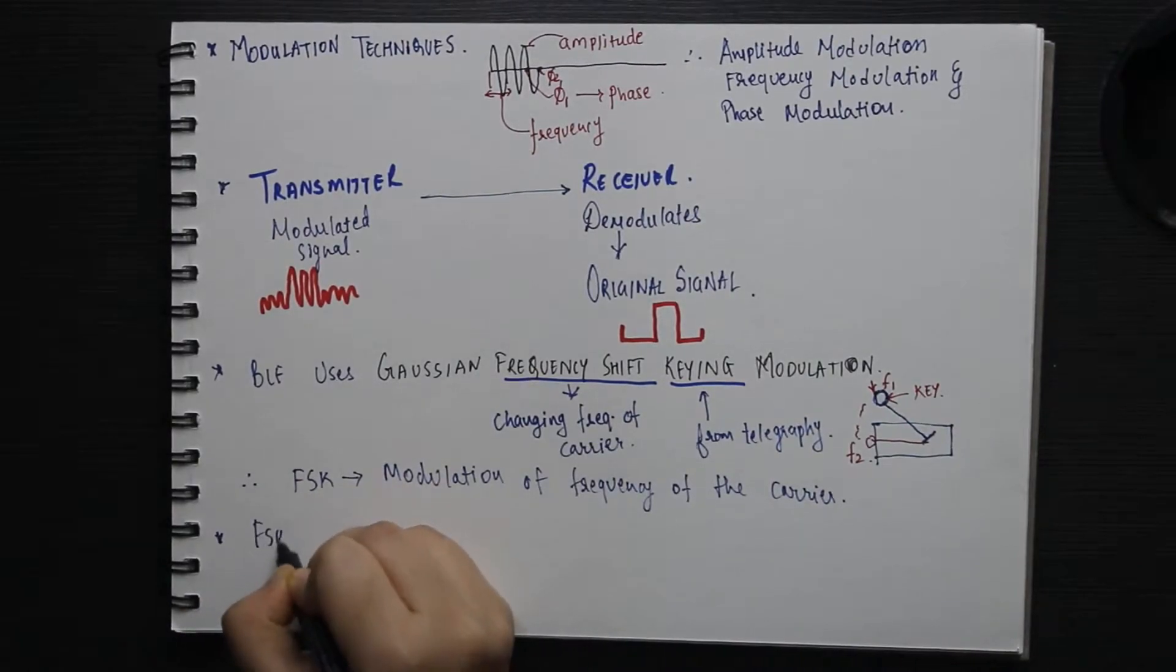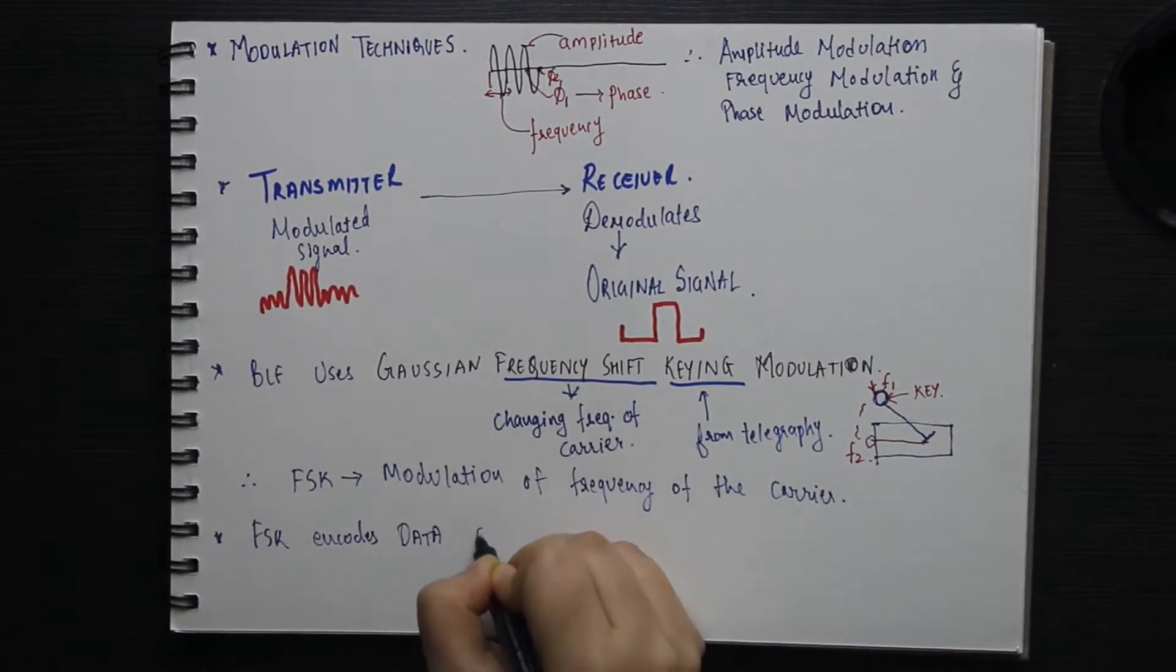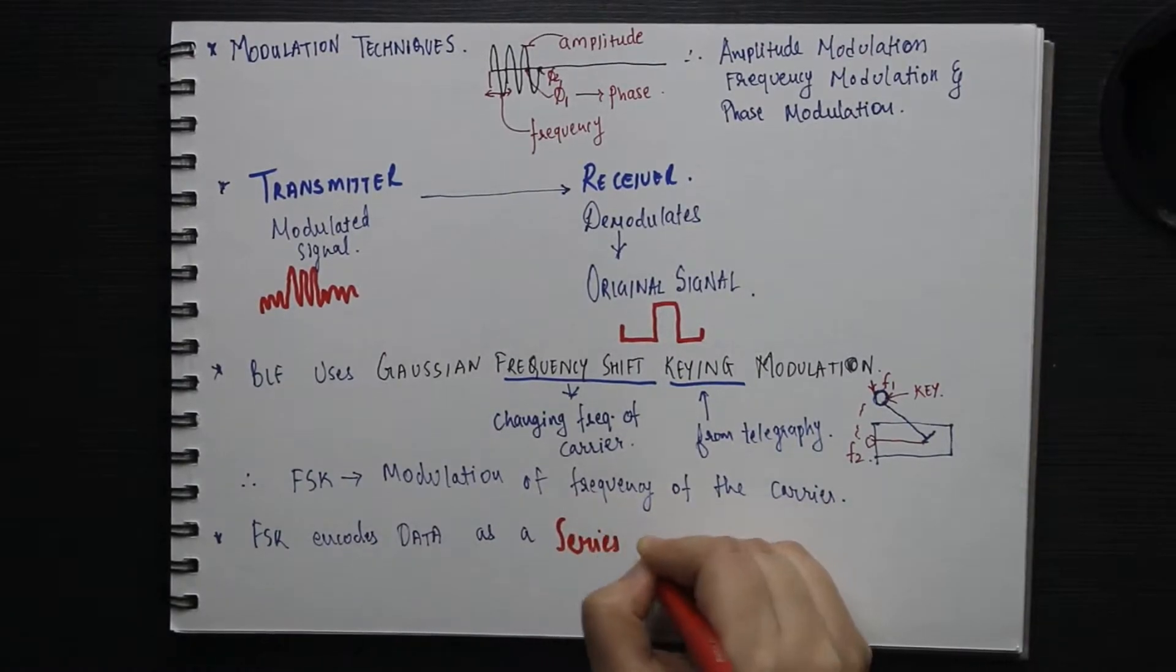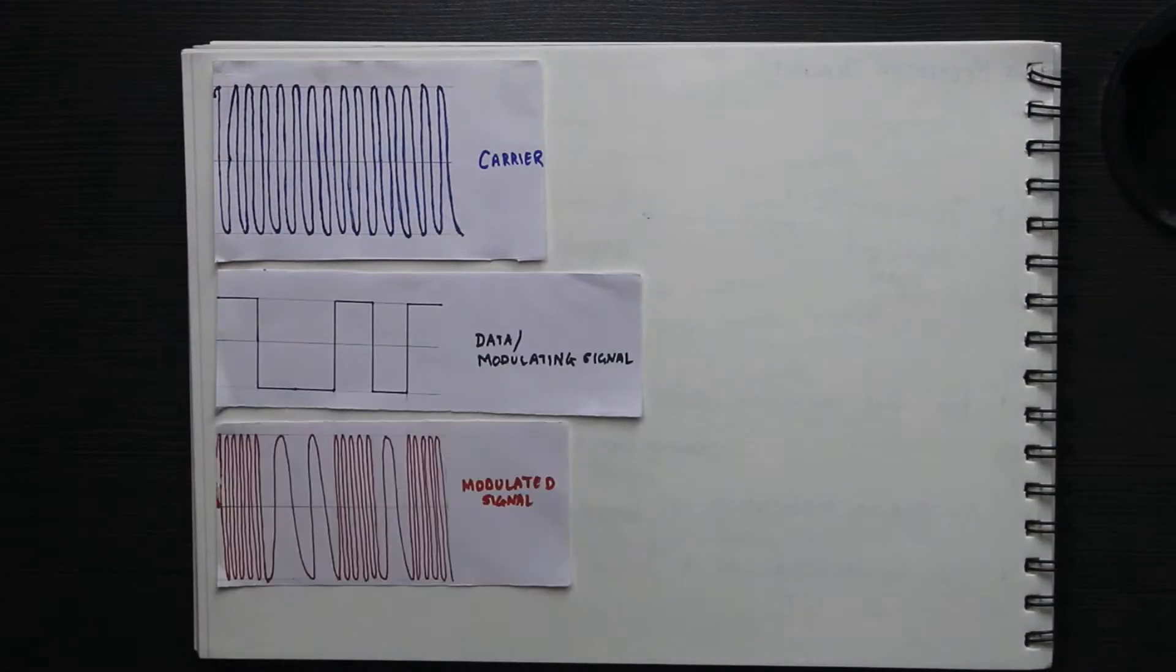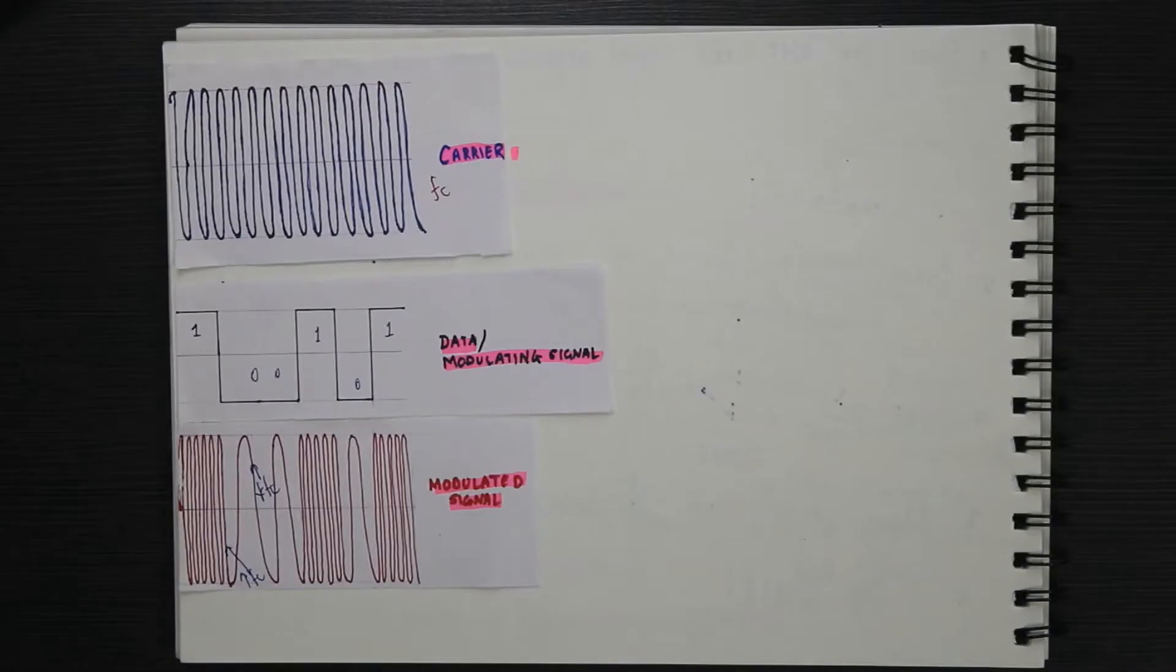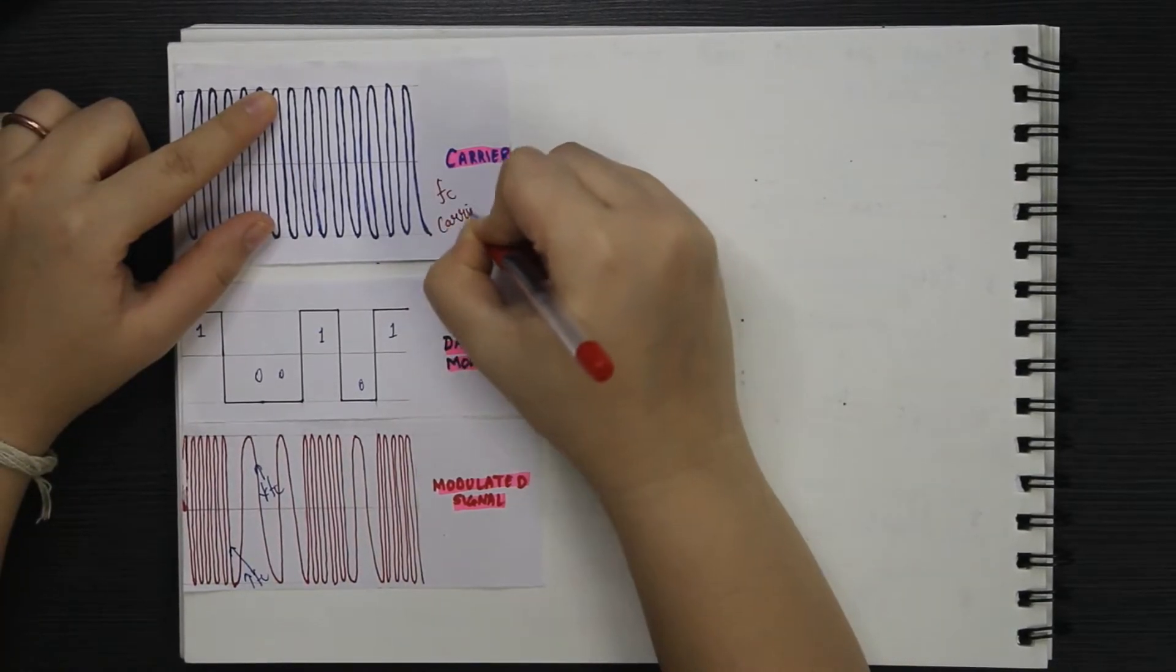Frequency shift keying encodes data as a series of frequency changes in a carrier, which means that a binary one is encoded by increasing the carrier frequency and zero is encoded by decreasing the carrier frequency to a known value.